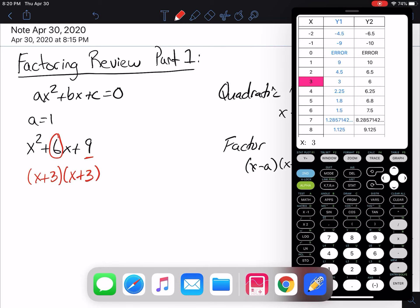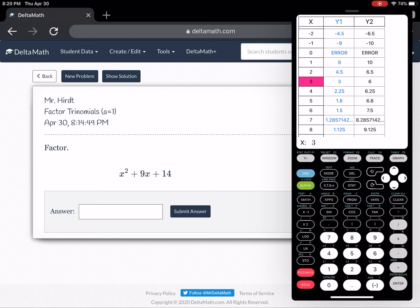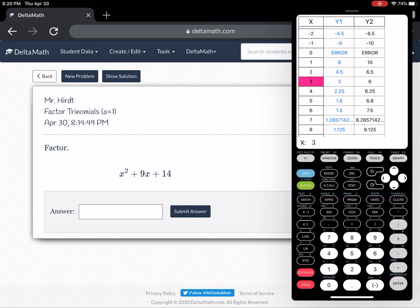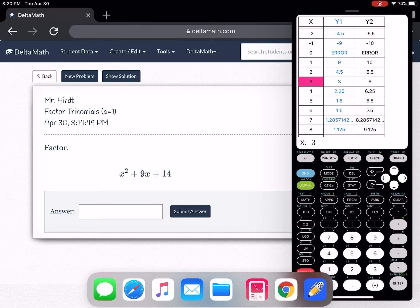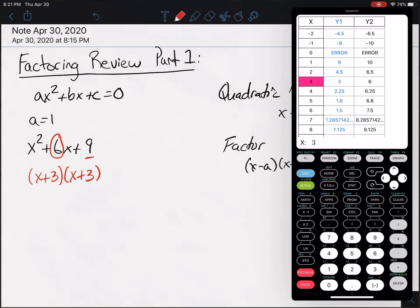And just to finish this short video up, let's take a look at what a delta math problem might look like. So x squared plus 9x plus 14. So x squared plus 9x plus 14.